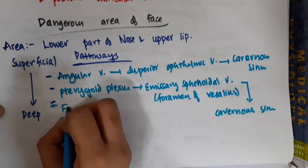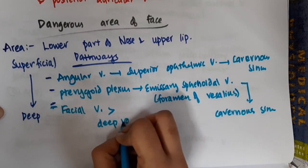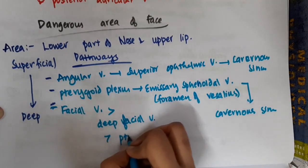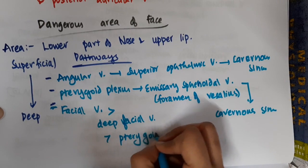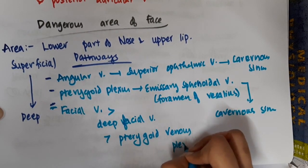Then the deepest part: there is facial vein. From the facial vein, it goes to deep facial vein. From the deep facial vein, there is pterygoid venous plexus. Facial vein, deep facial vein, and pterygoid venous plexus.